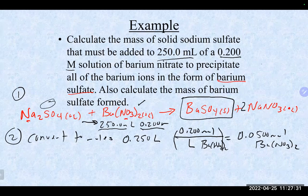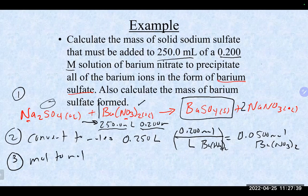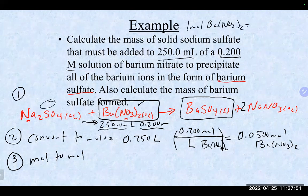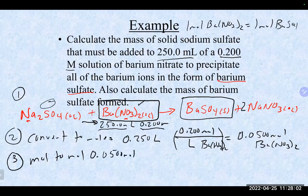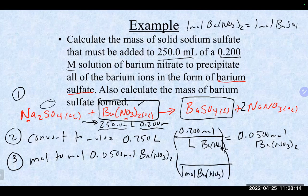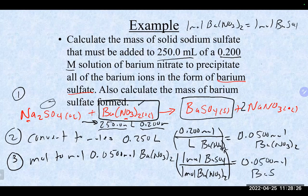Step 3: mole-to-mole relationship. From the balanced equation, barium nitrate and barium sulfate are in a one-to-one ratio. So 0.05 moles of barium nitrate gives 0.05 moles of barium sulfate.